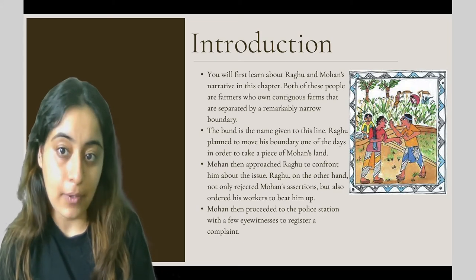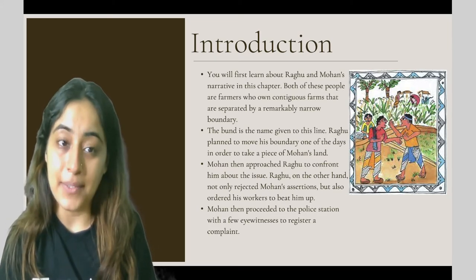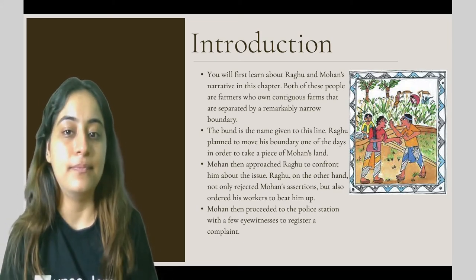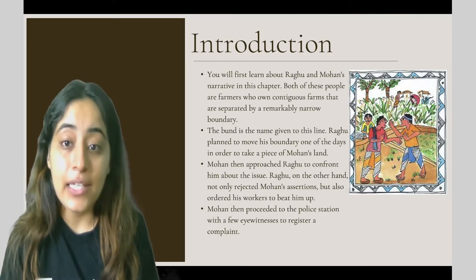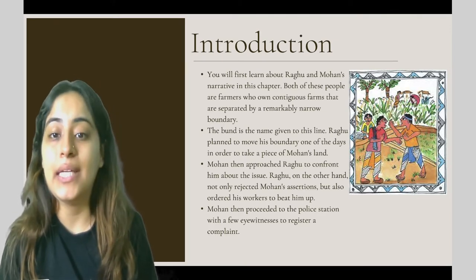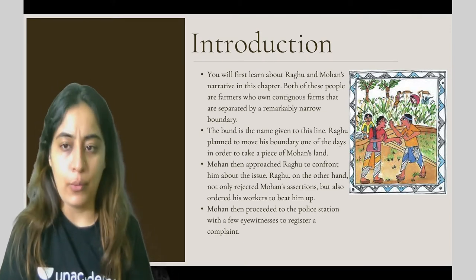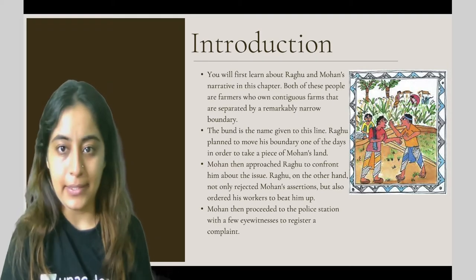Let's get into our lesson for today. You will first learn about Ragu and Mohan's narrative in this chapter. Both of these people are farmers who own contiguous farms that are separated by a remarkably narrow boundary.